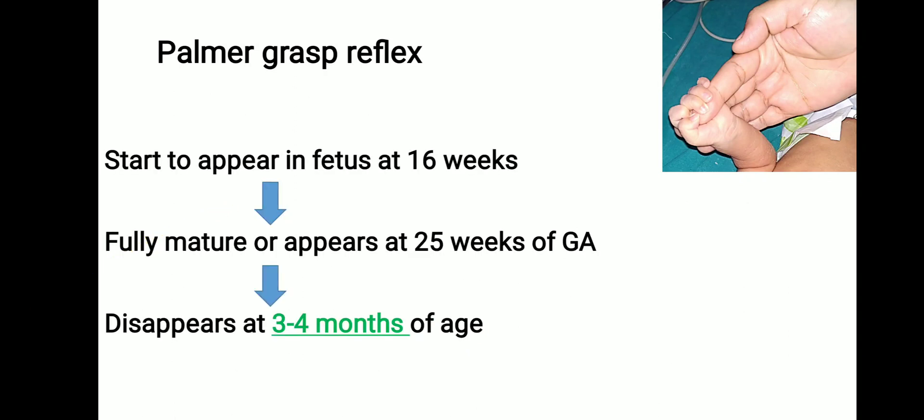The palmer grasp reflex starts to appear in the fetus at 16 weeks of gestational age and can be seen on antenatal ultrasound. It is fully mature at 25 to 26 weeks of gestational age, so in newborns beyond 26 weeks it will be present. It disappears at three to four months of age, though it may be weakly present between four to six months.